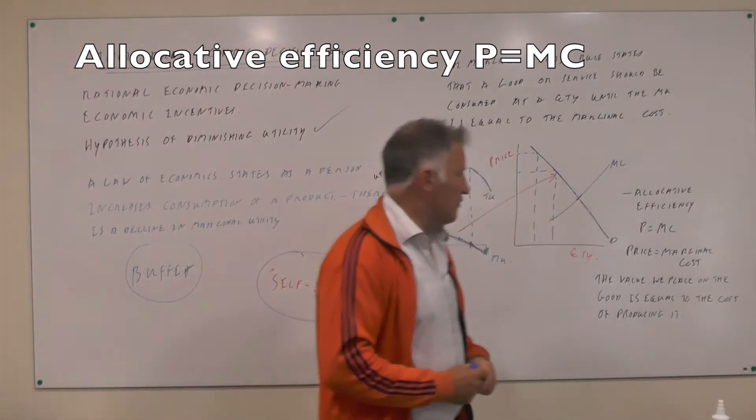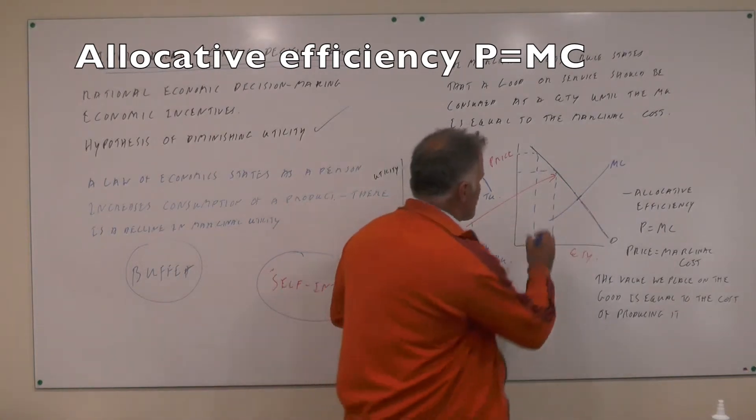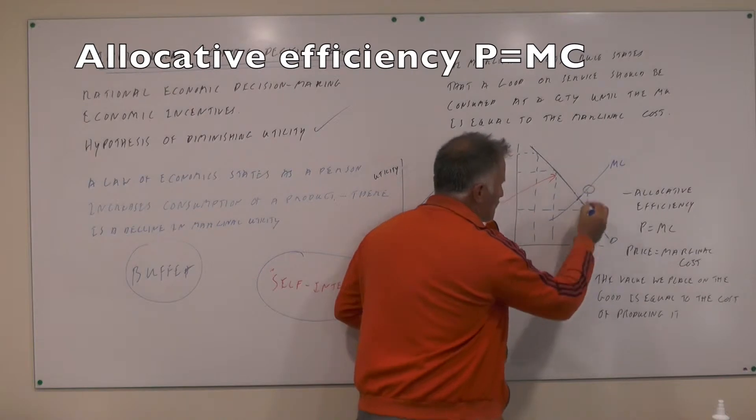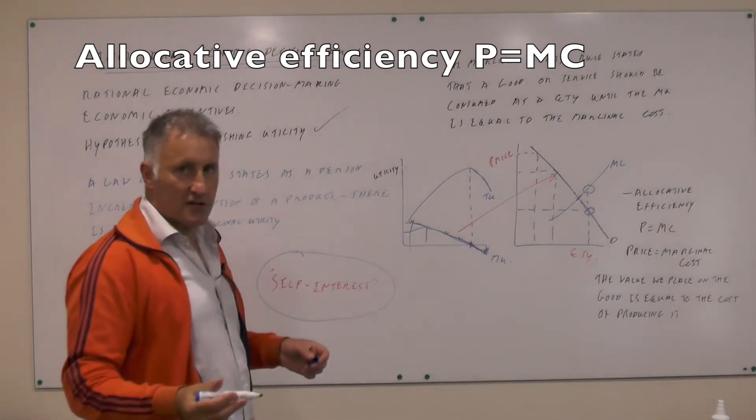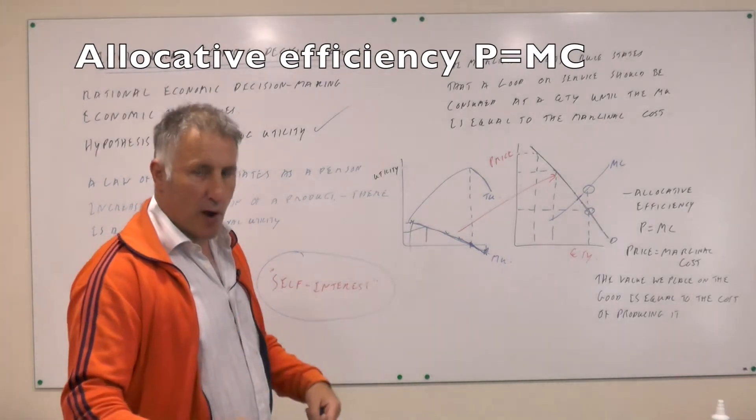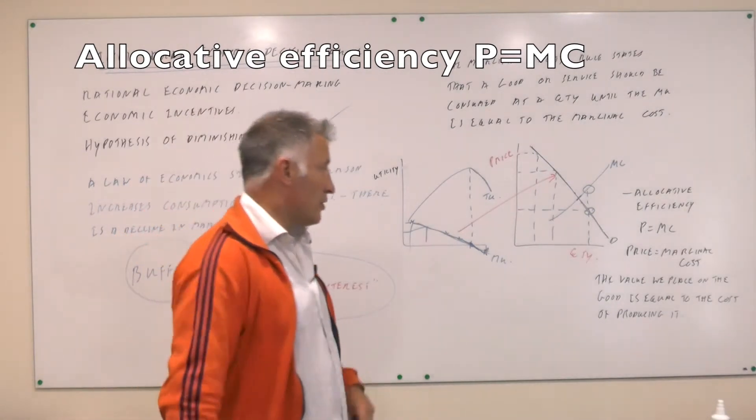This here shows the marginal cost curve. If we go beyond this point, if we consumed here, at that point the marginal cost of the good will be greater than the satisfaction that the consumer derives from the good. At that point we would be worsening economic welfare because the cost of producing the good is more than the utility of demanding the good.